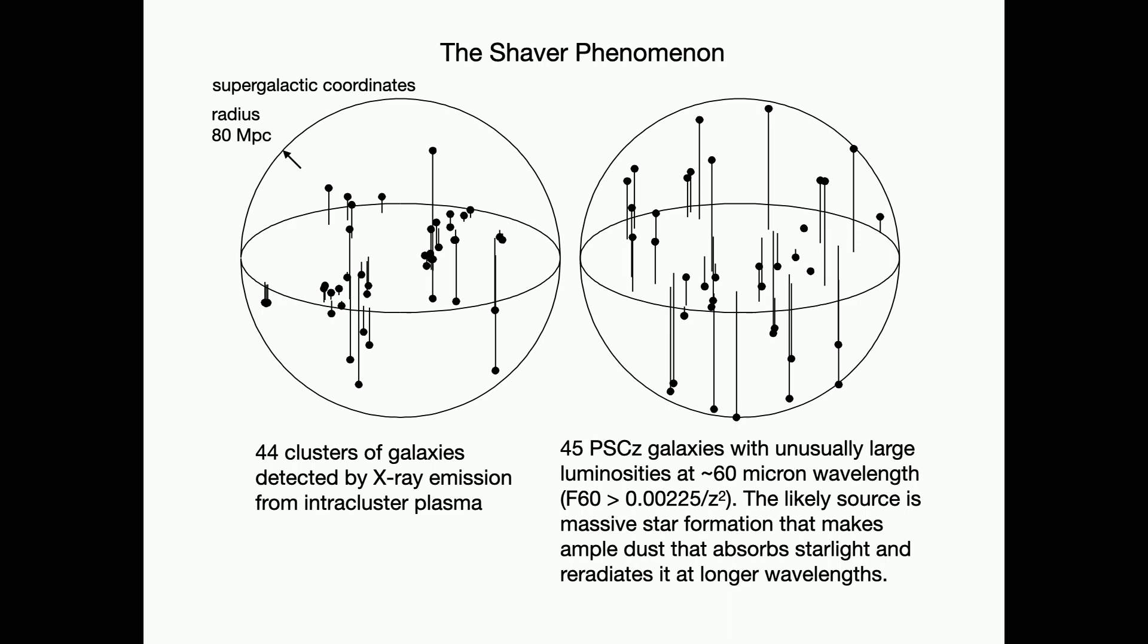I have made in the past several times plots illustrating Shaver's phenomenon with more modern, more recent data. So on the left, clusters of galaxies detected by x-ray emission from the plasma. So a cluster of galaxies you know has hot plasma between the galaxies. That plasma radiates in x-rays. X-rays are relatively easy to detect in a satellite. So we have a pretty good and complete sample of massive clusters of galaxies detected out to fairly large distances. And here they are. Here is the sample.